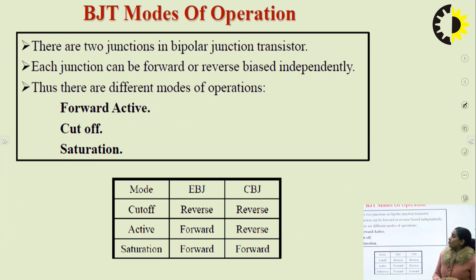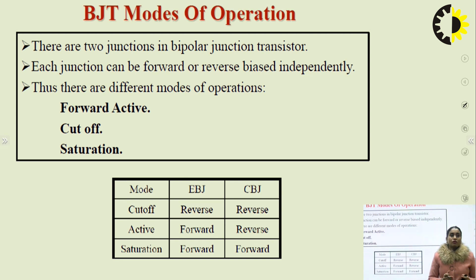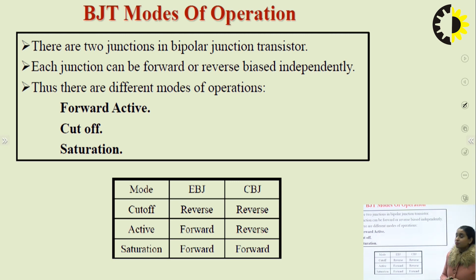Now, modes of operation. There are two junctions in a BJT. Whether the BJT is working in cutoff mode, active mode, or saturation mode depends on the kind of biasing provided to the junctions. Each junction can be forward or reverse biased independently, giving different modes of operation.